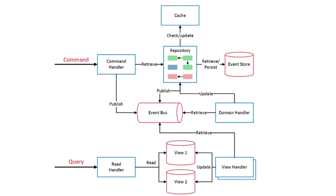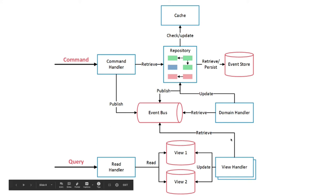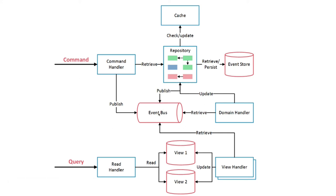Two different databases, two different objectives, total isolation — and the projection handles the sync logic. View handlers request a query, it publishes to the event bus, and we read data from the read database. In the event store, you store only those things which are changing the state of the system.